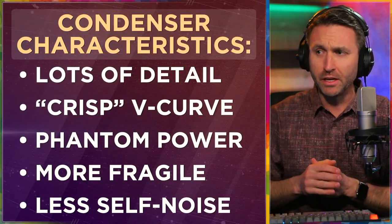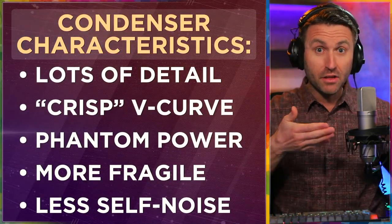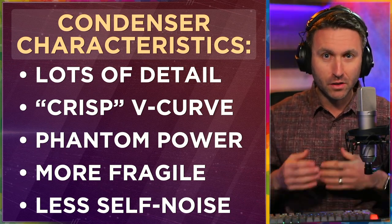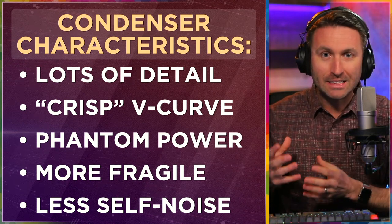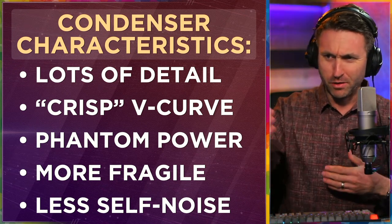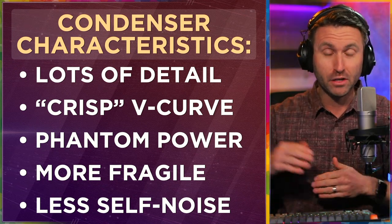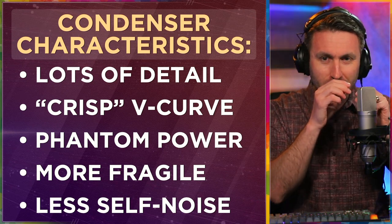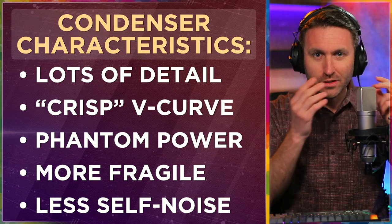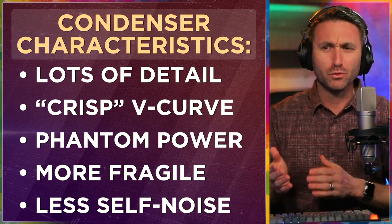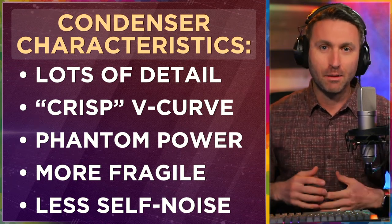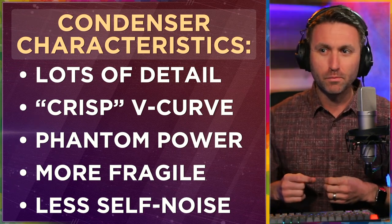Let's get into some characteristics here, beginning with condenser microphones. This one is the Neumann U87 AI. They come with lots of detail, to the extent that you can really pick up every single thing of my voice — it feels sharp, crisp. If you leaned in there you could hear just my fingers rubbing; it picks up all that detail to a high degree, something that a dynamic microphone just wouldn't do in the same way.